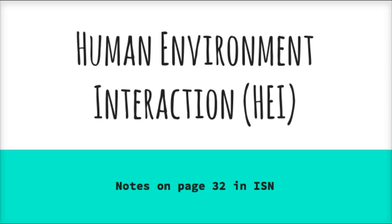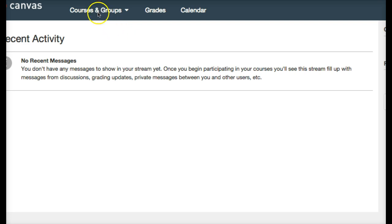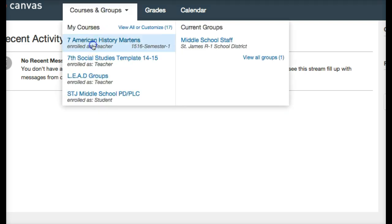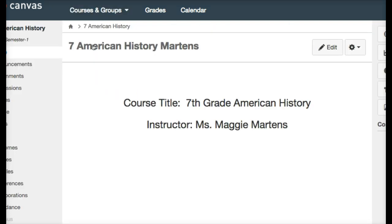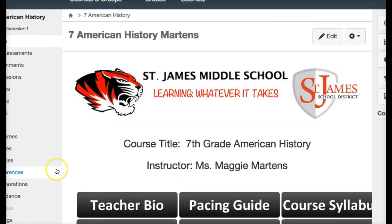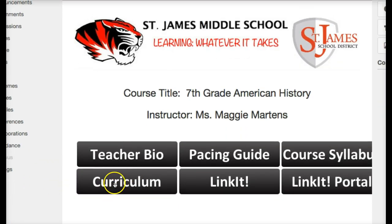Today we are starting Human Environment Interaction, or HEI as I'm going to call it, and everything is going to go on page 32 in your ISN. The first thing we need to do is update your table of contents. Go to Canvas, then courses and groups, American history, and then either curriculum or modules to get to our page.